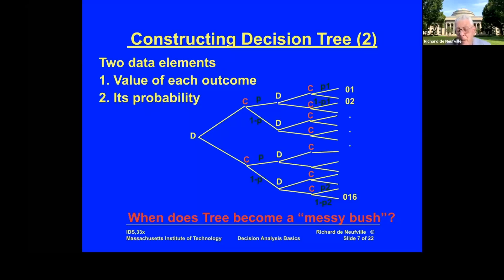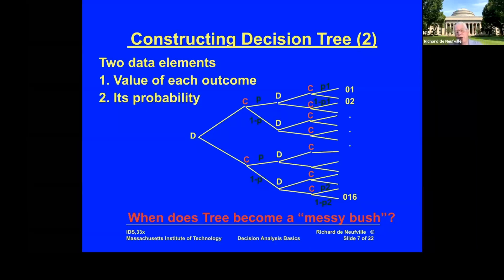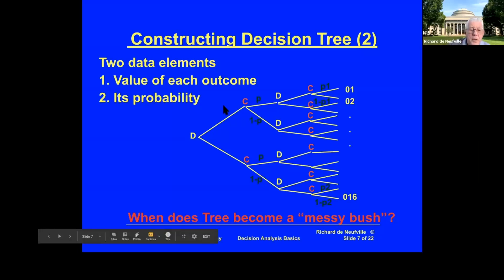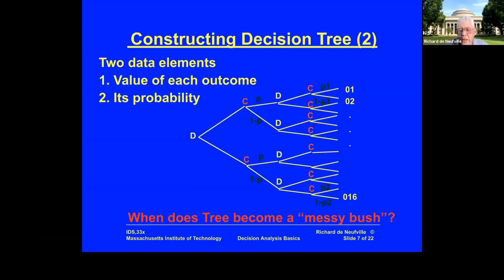When looking at a particularly difficult problem — for example, trying to represent a game of chess where I could move something like 10 or 12 moves at the beginning with my pawns, castles, and rooks — my opponent then also has choices. A realistic problem can explode on you. So, going back to my remark at the beginning: decision analysis is good for simple to moderately complicated problems. For very complicated problems, it just gets too messy.